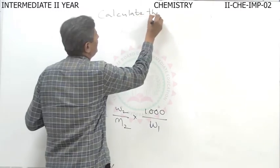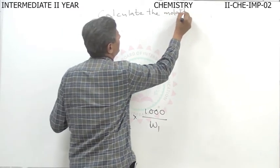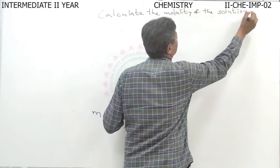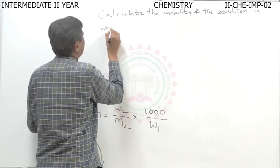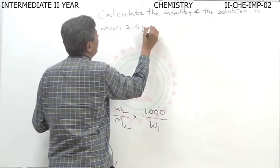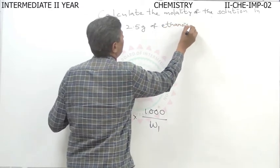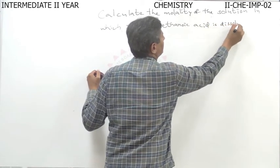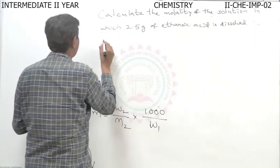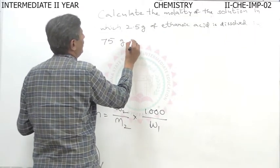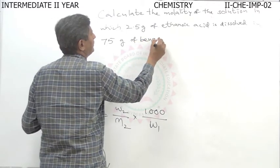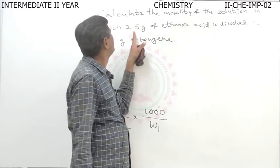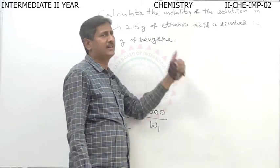Now we can see one problem: calculate the molality of a solution in which 2.5 grams of ethanoic acid is dissolved in 75 grams of benzene. Here, weight of ethanoic acid is given as 2.5 grams.